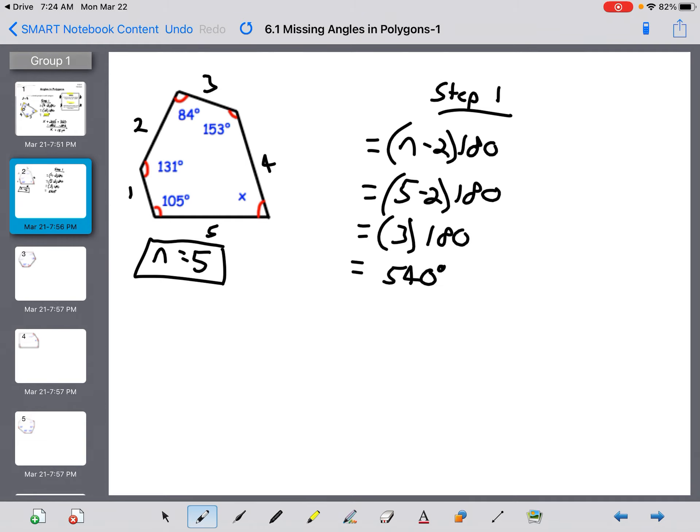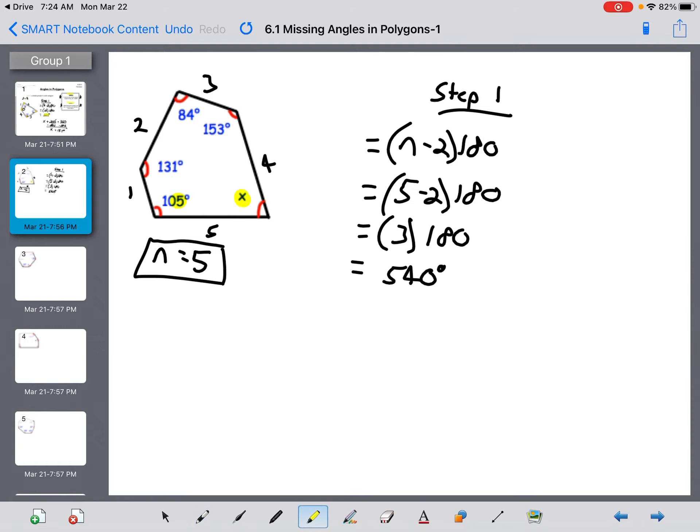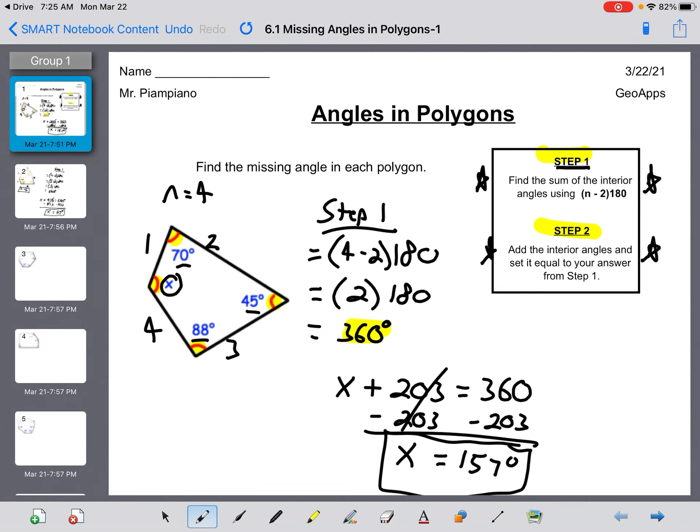Step two is to add the interior angles and set it equal to your answer from step one. So I'm going to add up all these angles. We have X plus I'm going to add 105, 131, 84, and 153 together in my calculator. 105 plus 131 plus 84 plus 153, and that equals 473 degrees. 473 plus that missing angle X is going to equal 540 degrees. Subtract 473 on both sides and X is equal to 540 minus 473, 67 degrees.